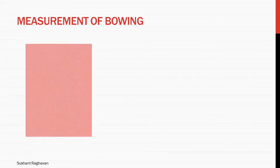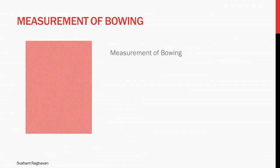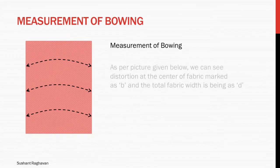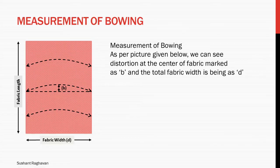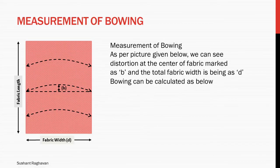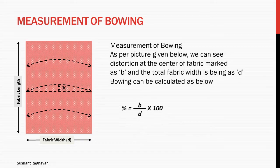Measurement of bowing: as per the picture given below, you can see the distortion at the center of the fabric marked as B, and the total fabric width is marked as D. Bowing percentage can be calculated as: percentage = (B ÷ D) × 100.